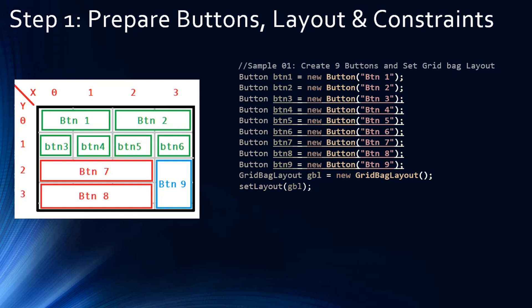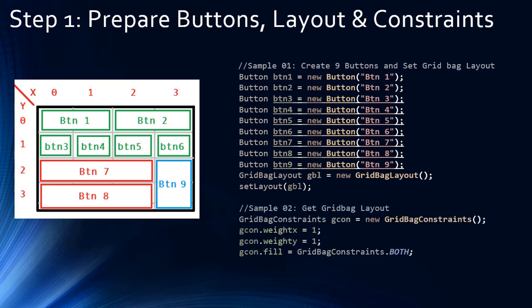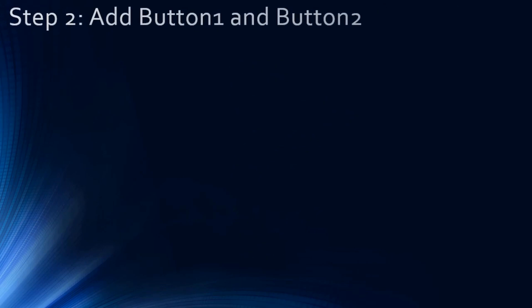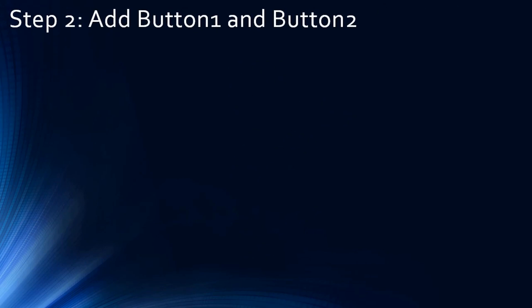We just created the buttons but haven't yet added them to the frame window. Next we create our GridBagConstraints. The three common properties are weightX=1 and weightY=1 — we are not going to resize buttons based on weight, so we set both X and Y to 1. Then we set fill to BOTH, meaning all buttons will occupy the entire area of the frame window.